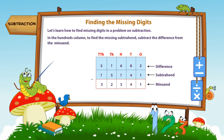In the hundreds column, to find the missing subtrahend, subtract the difference from the minuend. 6 minus 3 is equal to 3.